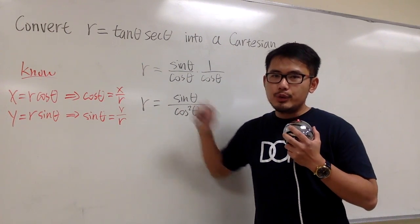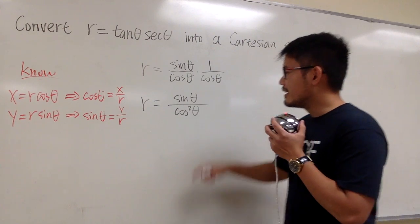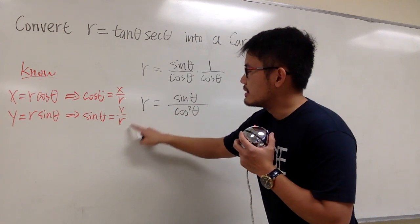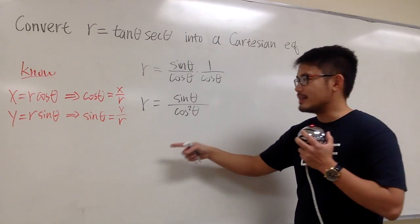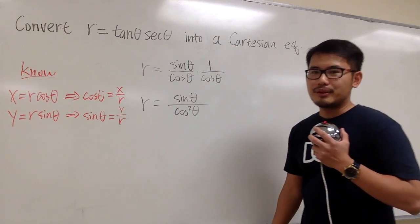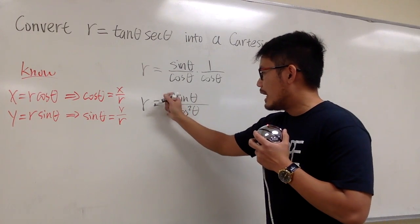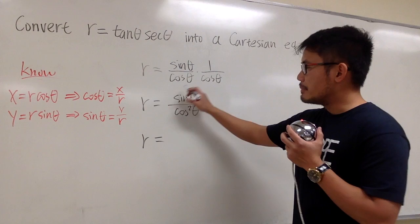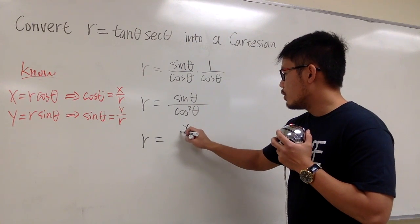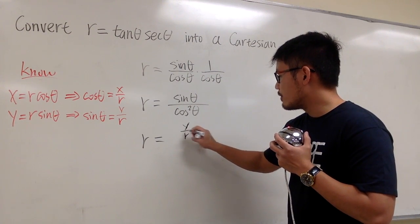And these are the two ingredients that we want to use, because now I can just plug in this y over r for the sine theta here. Likewise, we do the same for the denominator. So we will have r right here. On the top is sine theta, so that's y over r.